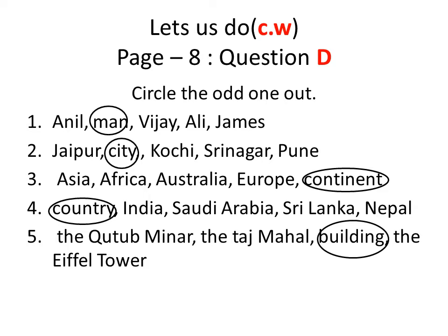Next: Jaipur, City, Kochi, Srinagar, Pune. City is a common noun; the remaining are proper nouns, so circle City. Next: Asia, Africa, Australia, Europe, Continent — circle Continent, as the remaining are proper nouns. Next: Country, India, Saudi Arabia, Sri Lanka, Nepal — circle Country. Next: the Qutub Minar, the Taj Mahal, Building, the Eiffel Tower — circle Building, for the same reason.